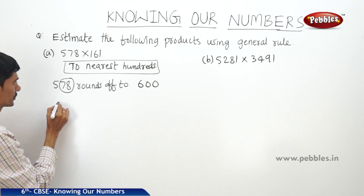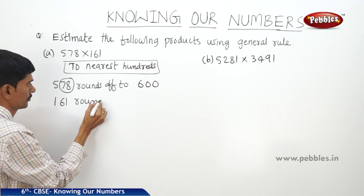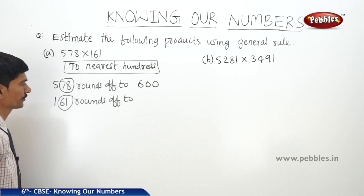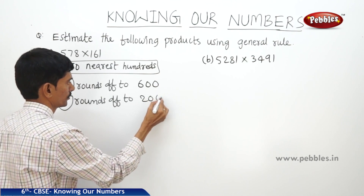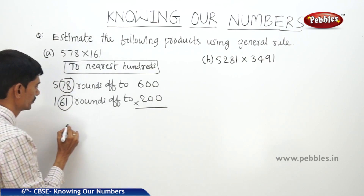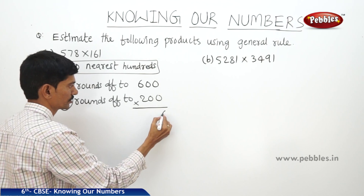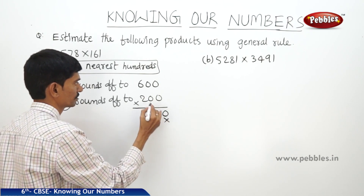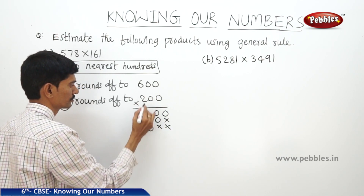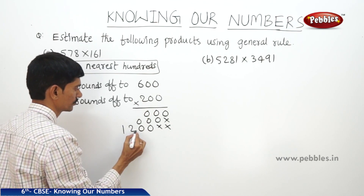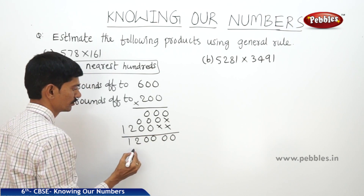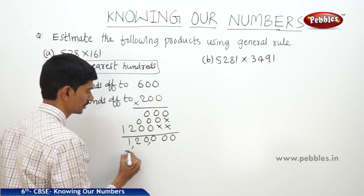And the next one, 161 — here also up to the tens place it is 61, which is more than 50, so we take 200. Now the estimated product: when you multiply 600 by 200 you get 1,20,000 as the estimated product.